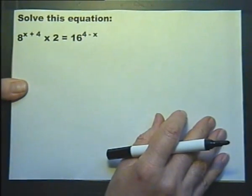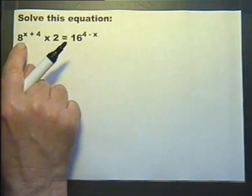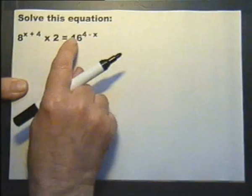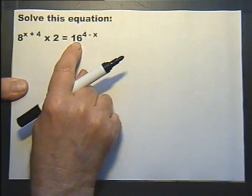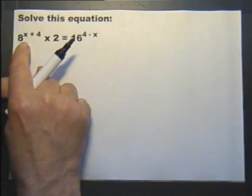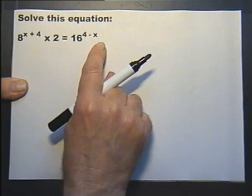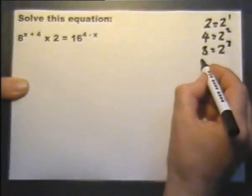The first thing we have to spot is that 8 can be written as 2 to the power of 3, and 16 can be written as 2 to the power of 4. So the whole equation can be written in powers of 2. Let's make a note of that: 2 equals 2 to the power of 1, 4 equals 2 to the power of 2, 8 equals 2 to the power of 3, and 16 equals 2 to the power of 4. So let's rewrite this.